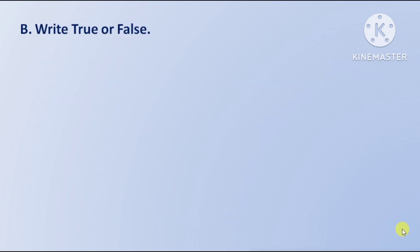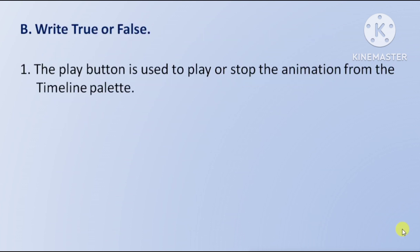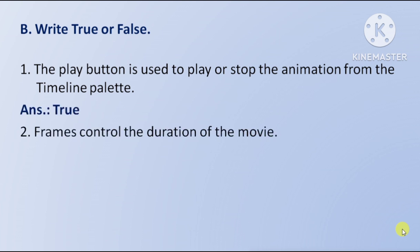Right — True or False. First question: the play button is used to play or stop the animation from the timeline palette — this is true. Next question: frames control the duration of the movie — this is also true.